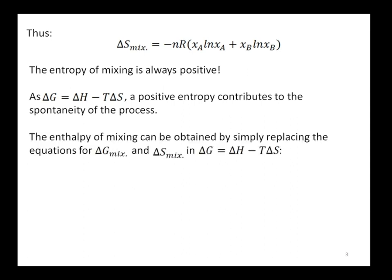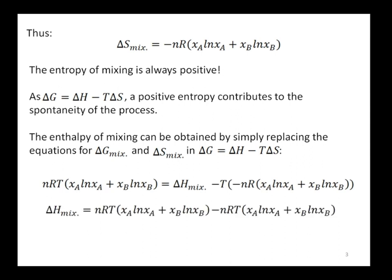The enthalpy of mixing can be obtained by simply replacing the equations for delta G of mixing and delta S in the general equation delta G equals delta H minus T delta S. By doing so, we will have an equation like this one and we can make some rearrangement and reach this very important result: delta H of mixing equals zero.